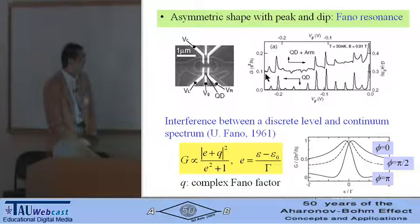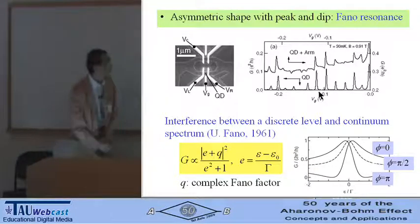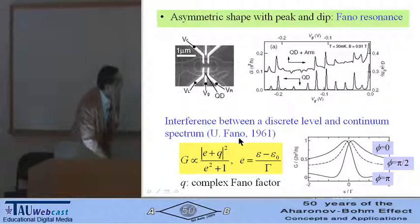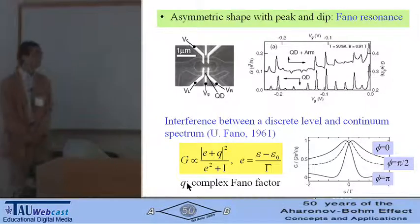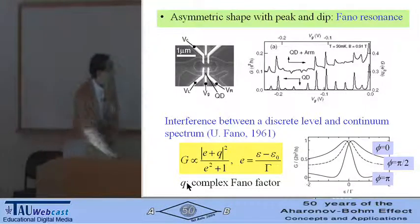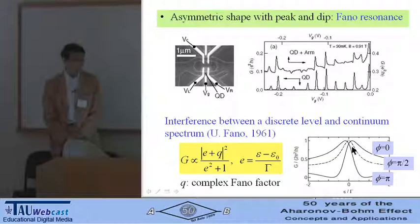The Fano resonance is due to the interference between a discrete level in the quantum dot and continuum spectrum in the leads. Conductance is given by this equation, and Q is a complex Fano factor in the magnetic field. Shape of the Fano resonance changes with the magnetic flux inside the ring.